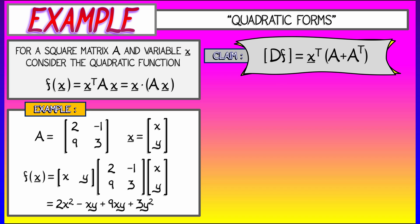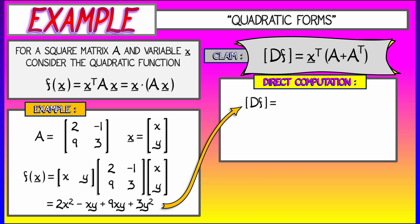And no surprise, this is called a quadratic form because this is giving you a degree 2 polynomial in the variables.